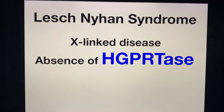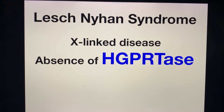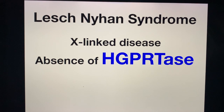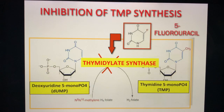Another clinical application is Lesch-Nyhan syndrome. Remember the two enzymes for purine metabolism: xanthine oxidase and HGPRTase. Lesch-Nyhan syndrome is an X-linked genetic disease characterized by the absence of HGPRTase. It presents with mental retardation, self-mutilation, aggressive behavior, and hyperuricemia.